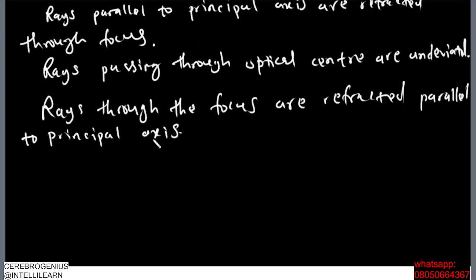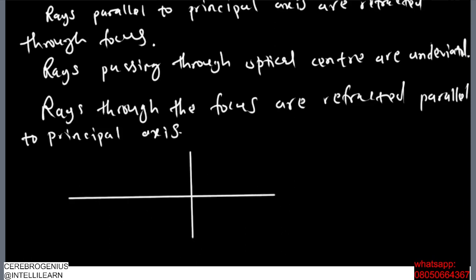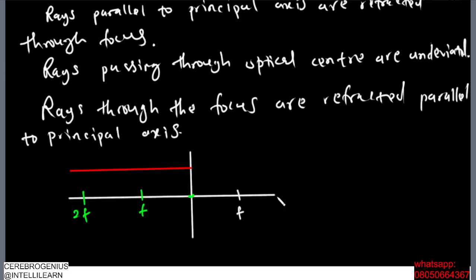Let's do a quick example. Say this is our lens, this is the focus, this is the optical center, and this is 2f. A light ray coming parallel to the principal axis will be refracted through the focus. Don't forget that a lens has two surfaces, so there will be another f and another 2f on the other side.